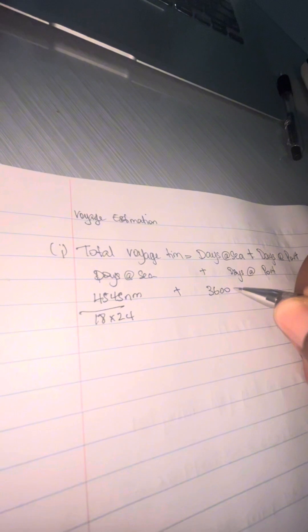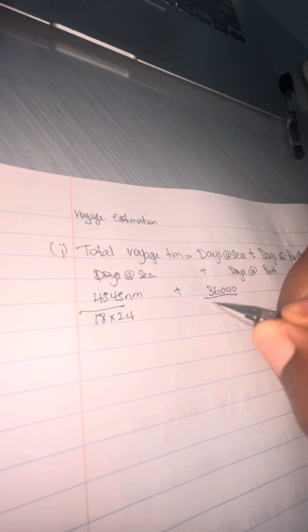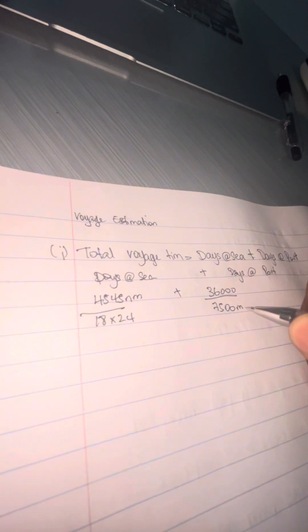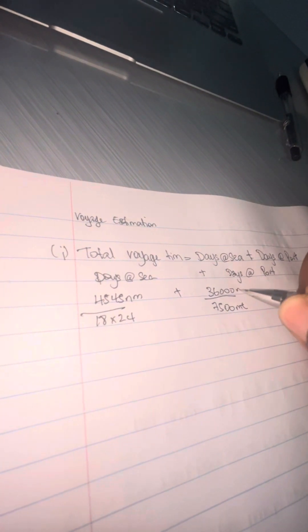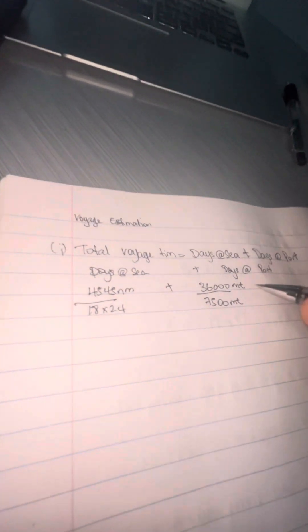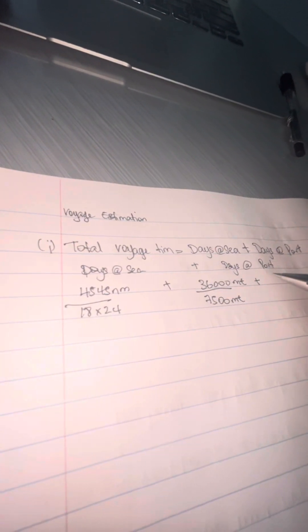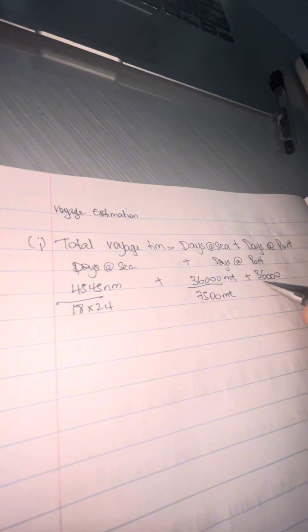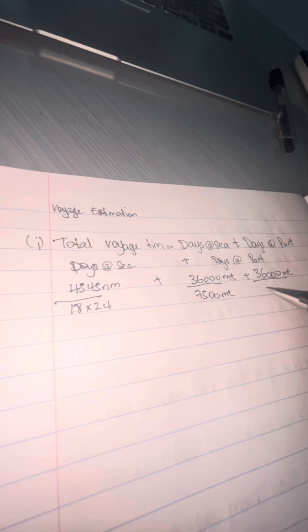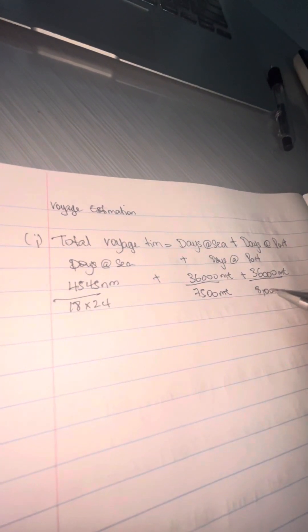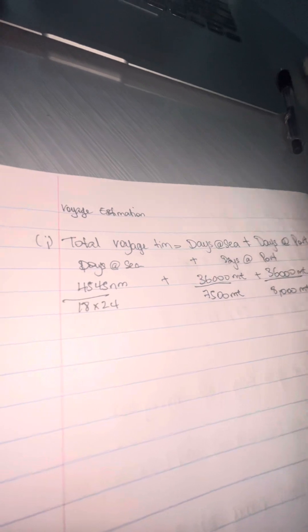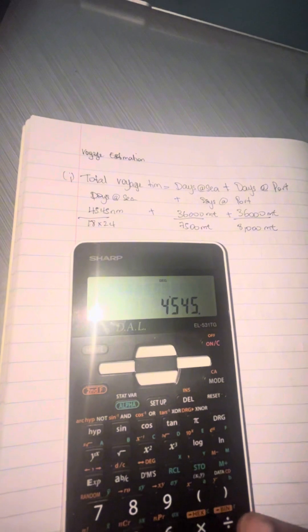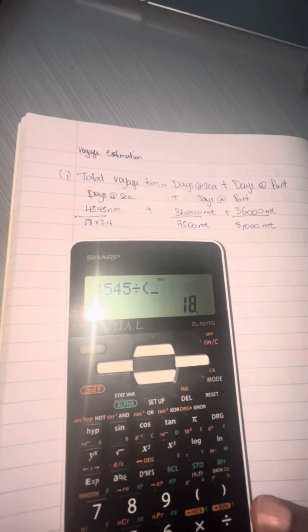You're going to do the days at port, and an important factor when doing days at port is to know you're going to use two different equations but should get one answer. On the question paper you'll see we're moving 36,000 cargo, and you're going to look where it says fiat—you'll see 7,500 metric ton and 8,000 metric ton per day. That's what they load and discharge.